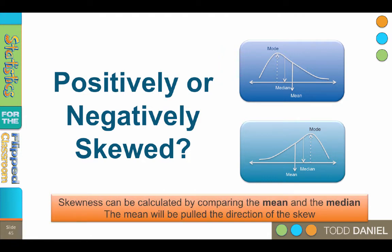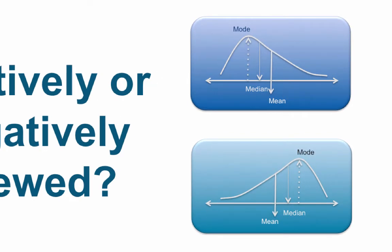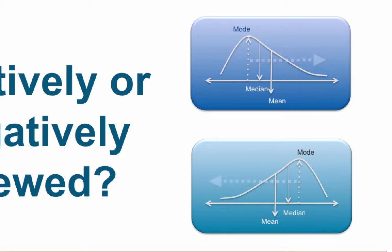In both of these curves, you can see what happens to the mean and the median in the case of skewness. Both of them are pulled in the direction of the outlier, but the mean is pulled further. That is because the mean is more susceptible to the outlier causing the skewness. Mathematically, we can calculate a measure of skewness by comparing the mean and the median, and this gives us a value we can use to quantify the skewness of our curve.